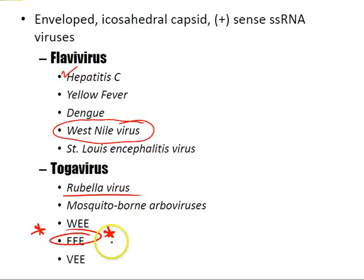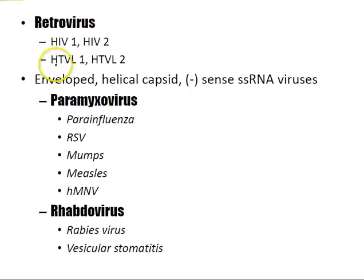Retroviruses include HIV-1, HIV-2, HTLV-1, and HTLV-2. HTLV-1 has been associated with certain lymphomas — worth looking up as the boards test on it. Enveloped helical capsid negative-sense single-stranded RNA viruses are the paramyxoviruses: parainfluenza, respiratory syncytial virus (RSV), mumps, measles, and human metapneumovirus (hMPV).